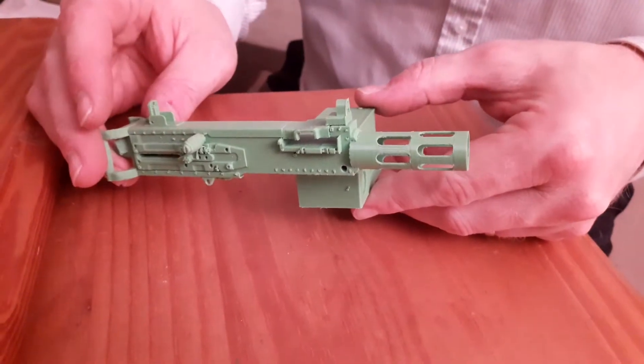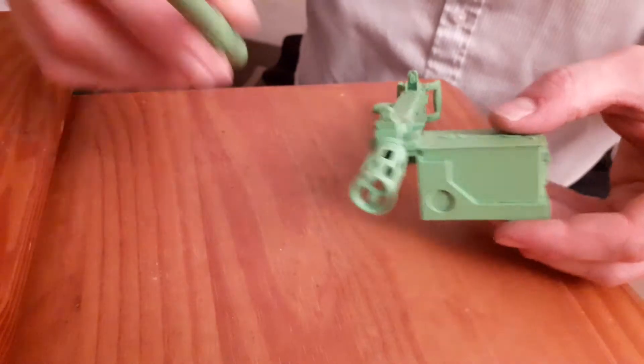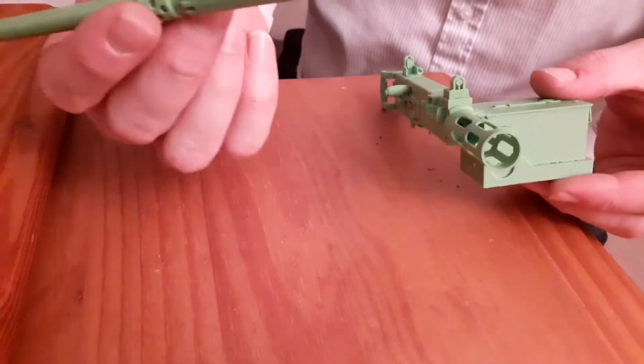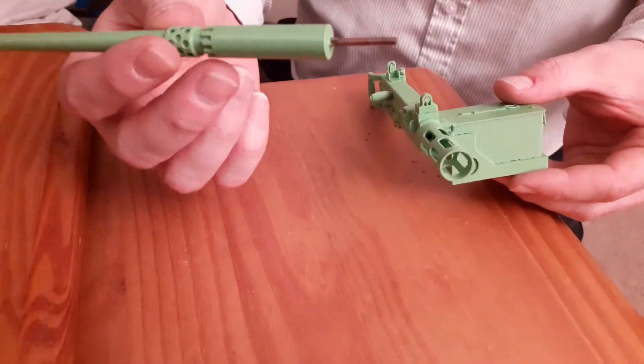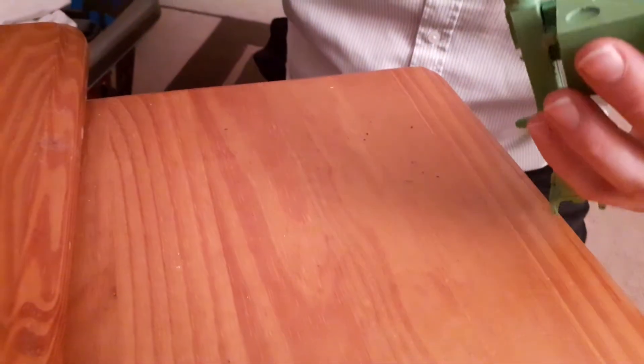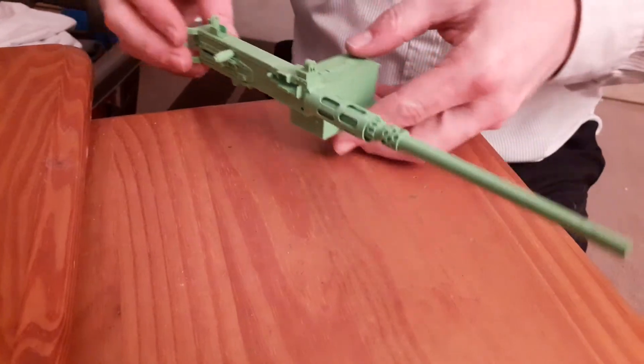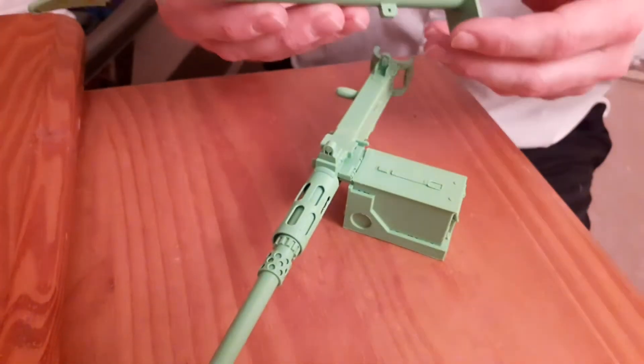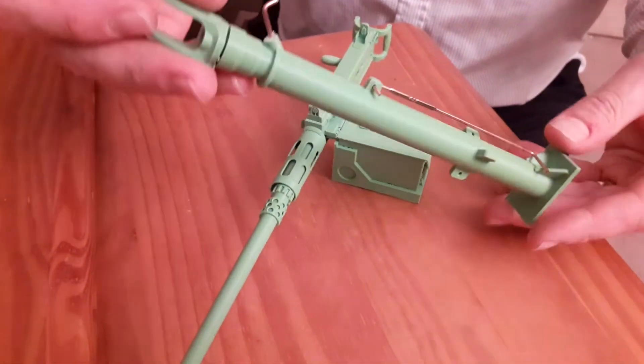Here we are, one .50 cal barrel. There's a separate pin in there, but you're gonna have to epoxy that in. It just slides into there. There we have it, .50 cal, and then here is the mount.